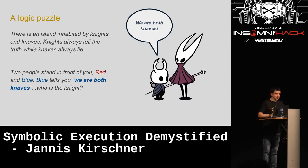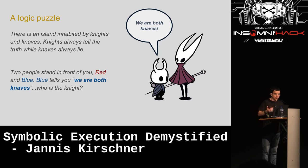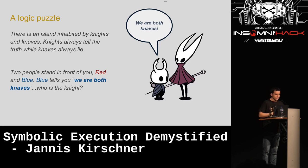How does it work? Let's do a logic puzzle. Imagine you're stranded on a deserted island, a storm brews up, and you see a big castle. Two people in front say they'll let you in if you solve a puzzle. There are two kinds of people on that island: knights that always tell the truth, and knaves that always lie. One is called Red and one is called Blue, and Blue tells you: 'We are both knaves.' Can you figure out which of them is the knight?